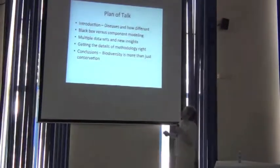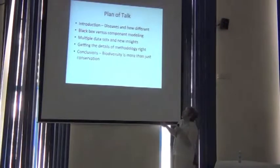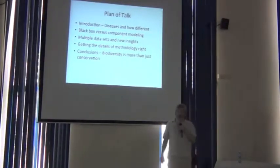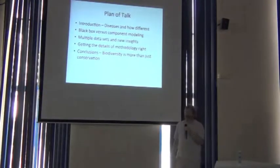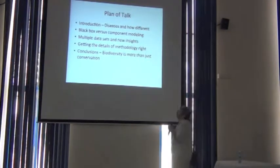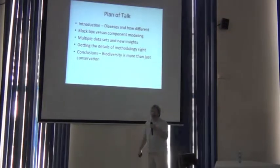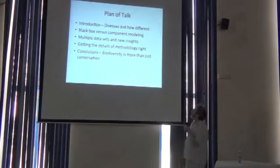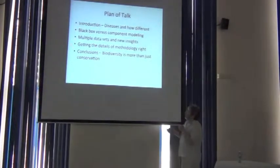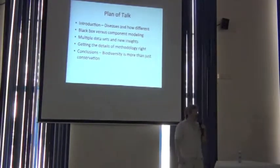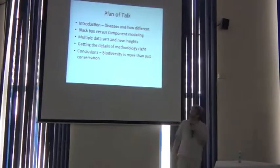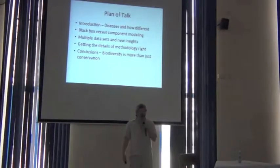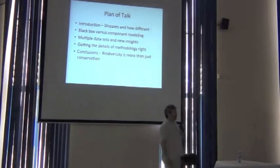Essentially what I want to do is give you a brief introduction. I'm going to talk about two approaches to reconstructing disease geography. I refer to them as black box versus component approaches. I'll give you a couple of illustrations of how multiple data sets become really critical. Then I'm going to give you some caveats which apply just as clearly to biodiversity, but some caveats about getting the methodology right.